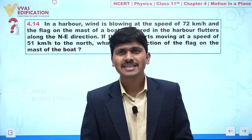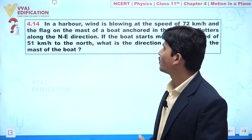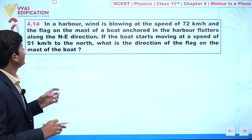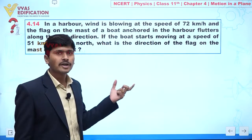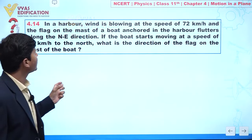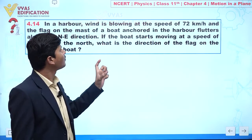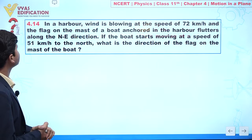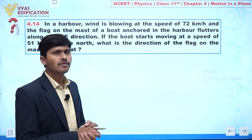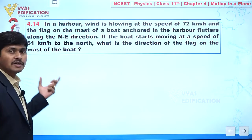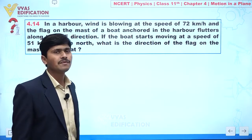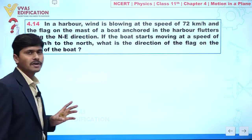We are going to discuss question number 4.14. In this question, in a harbor wind is blowing at the speed of 72 kilometers per hour and the flake on the mast of a boat anchored in the harbor flutters along the northeast direction. Find, if the boat started moving at a speed of 51 kilometers per hour to the north direction, what is the direction of the flake on the mast of the boat?